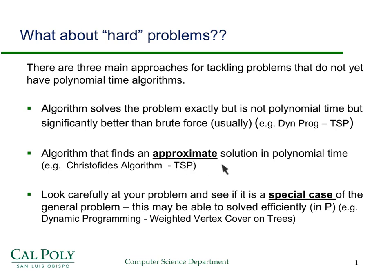Another approach is to find an approximate solution in polynomial time. There are lots of examples of that, and we're going to talk about some of those in detail. The other thing is to look at your problem and see if it's a special case of a more general problem. For instance, weighted vertex cover for a graph cannot be solved efficiently, but on trees we have a good dynamic programming algorithm which does solve it in polynomial time.